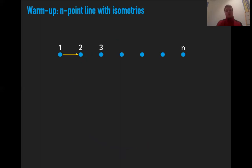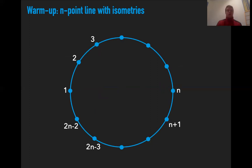Here's a case where isometries do affect the problem. If we have equally spaced points on a line, these partial isometries do not in general extend to global isometries. But we can extend the line to a circle by adding more points, and now we can apply the same logic as before. Therefore the competitive ratio of the 2n−2 point circle is an upper bound for the competitive ratio of MSS with isometry transformations on the n equally spaced points.